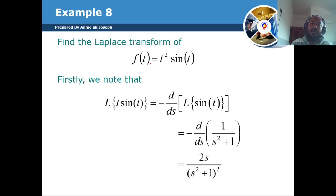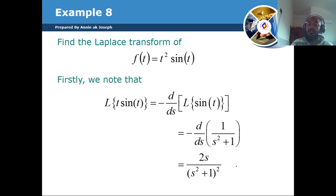So we have t squared times sin(t). First, we know that the Laplace of t·sin(t) equals minus the first derivative with respect to s of the Laplace of sin(t). Laplace of sin(t) is 1 divided by s squared plus 1. Taking the derivative, we get 2s divided by s squared plus 1, squared.